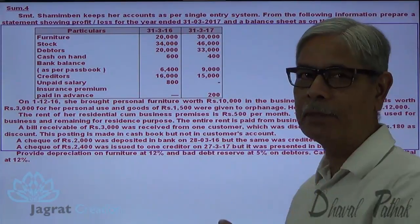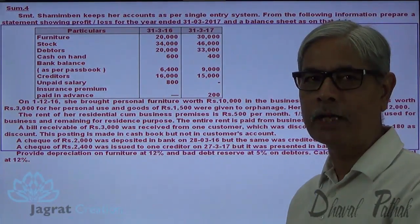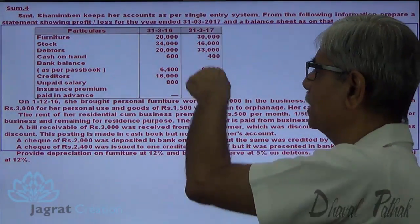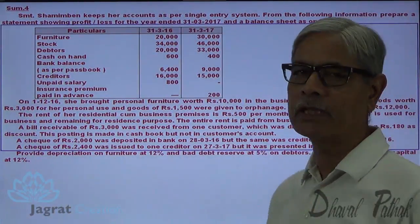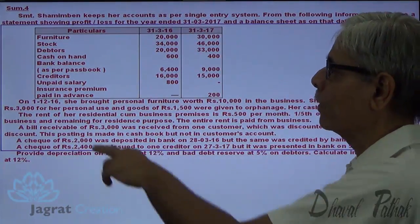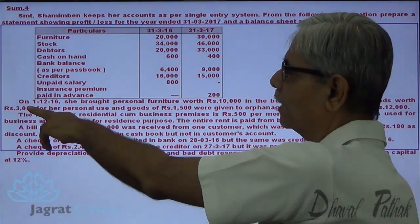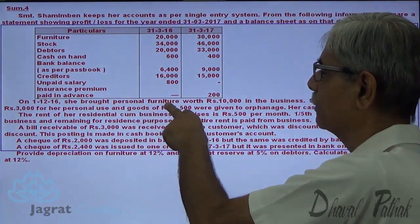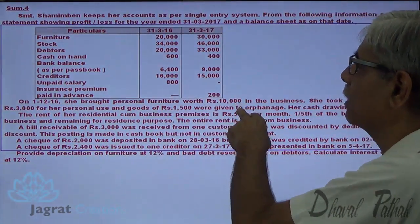These are the assets and liabilities details given at the beginning of the accounting period, and this is the details given for the end of the accounting period. On 1-12-2016, she brought personal furniture for 10,000.